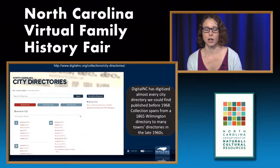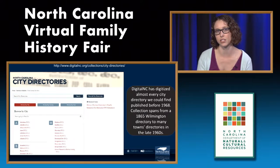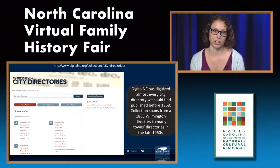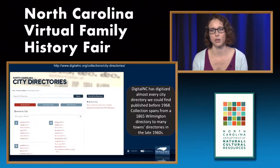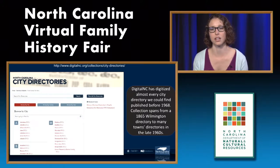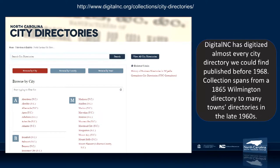The first type of published work I want to talk about are city directories. We have scanned almost a thousand city directories from cities across North Carolina — literally almost every one we can get our hands on — digitized up to 1967 with a 50-year cutoff. The collection spans from an 1865 Wilmington city directory to towns across the state's directories into the later 1960s. On the city directory landing page you can search across them, browse by city, by county, or by year. UNCG has also digitized the Greensboro city directories, and we have a link to those on our site.